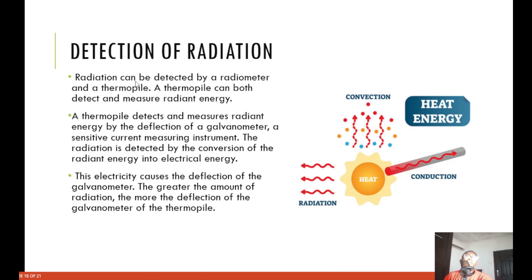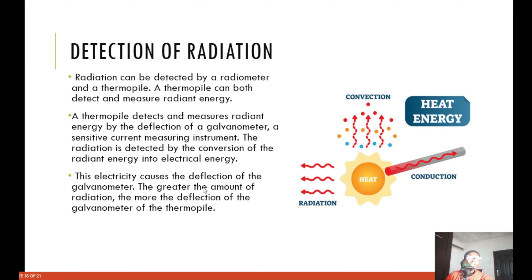Detection of radiation: radiation can be detected by a radiometer and a thermopile. A thermopile can both detect and measure radiant energy. A thermopile detects and measures radiant energy by the deflection of a galvanometer — galvanometers detect small currents, being sensitive current-measuring instruments. The radiation is detected by the conversion of radiant energy into electric energy, which causes the deflection of the galvanometer. The greater the amount of radiation, the more the deflection of the galvanometer.